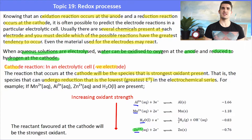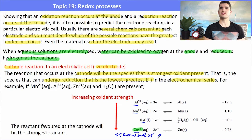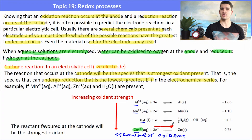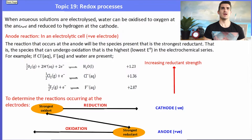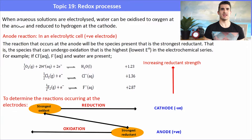We need to pick the one that is the strongest oxidant. When we list them according to the electrochemical series, it will be the one lowest on the left-hand side of the table. The one favoured will be the strongest oxidant out of all the possibilities. In this case, zinc ions would be the strongest oxidant and they would be favoured to undergo reduction at the cathode, forming zinc solid and coating the cathode.